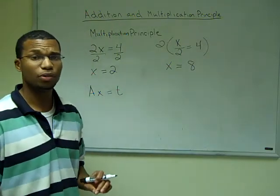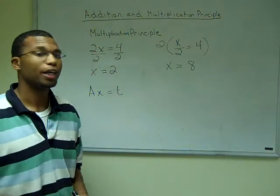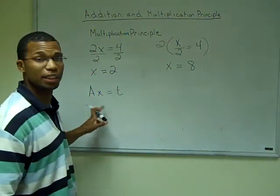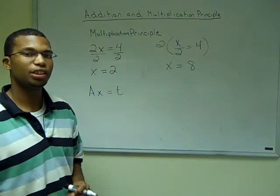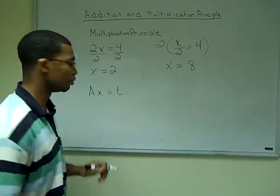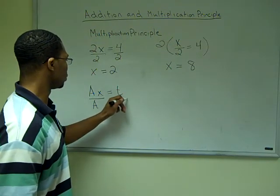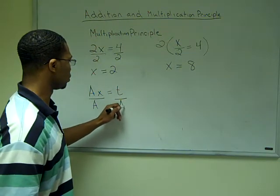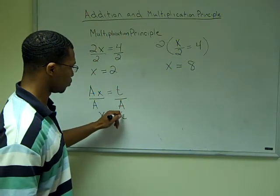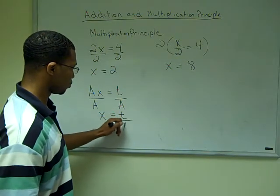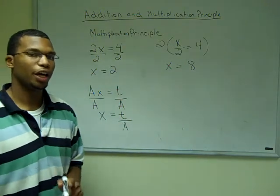In our last example, we have all variables — but there's no need to fret. This is the same as saying a times x. So to undo the multiplication, we're going to perform division. We get x = t over a.